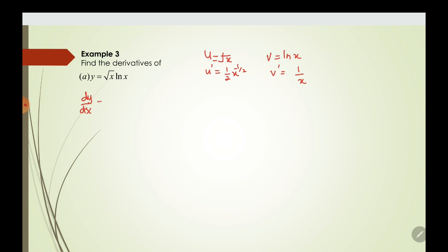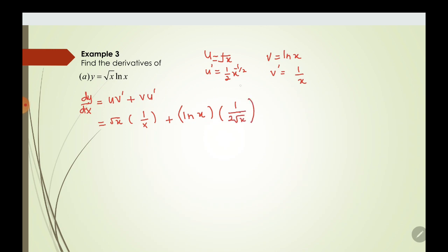dy/dx equals u·v prime plus v·u prime. Substituting what we have: ∛x multiplied by v prime (1/x), plus v which is ln(x), multiplied by u prime (1 over 2·∛x), because the power is negative so we bring it down as a fraction. If we expand, we get ∛x over x plus ln(x) over 2·∛x.